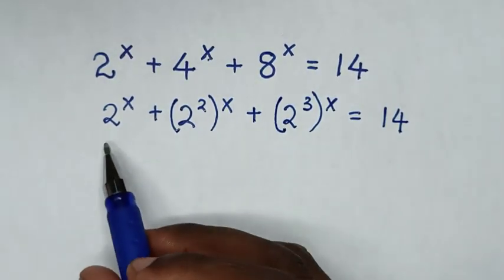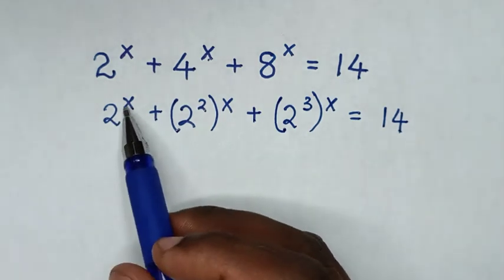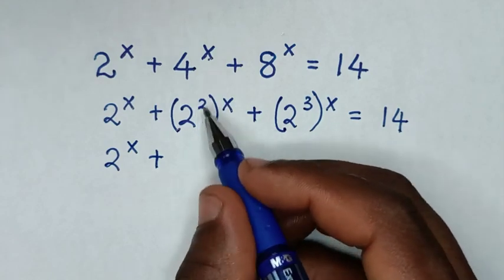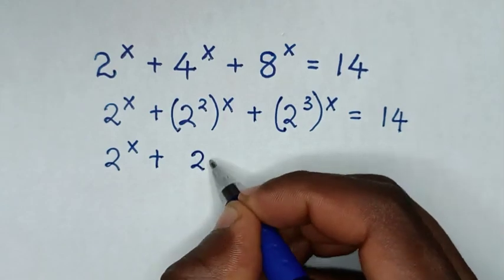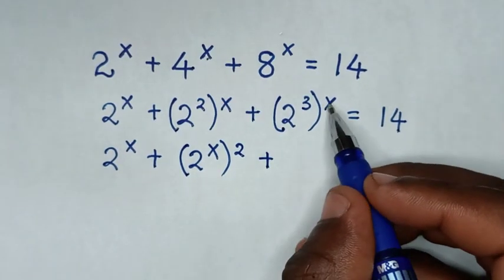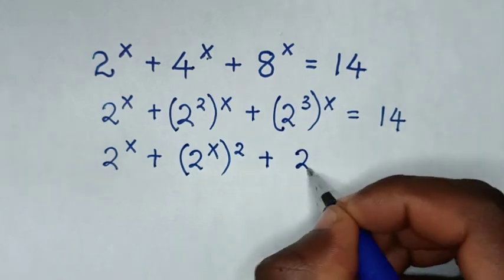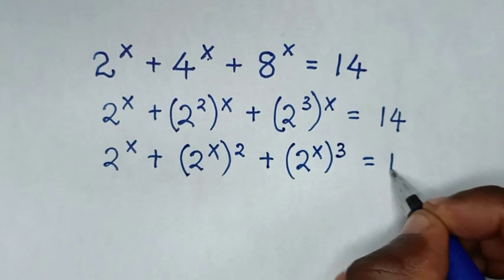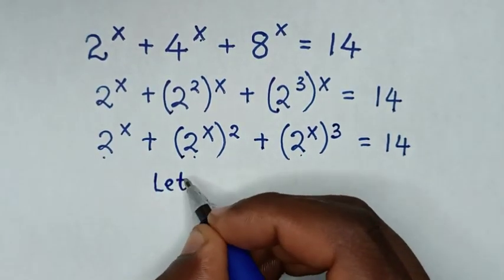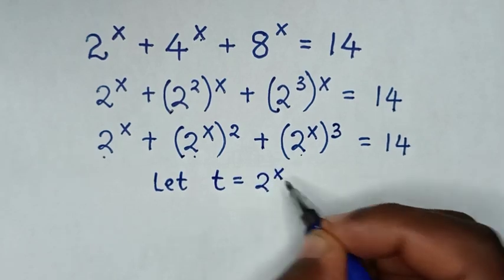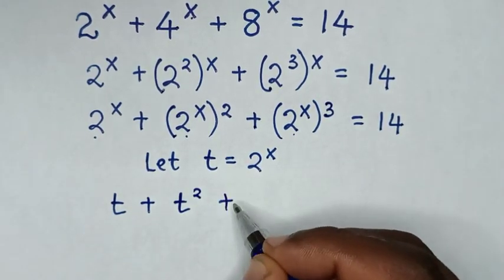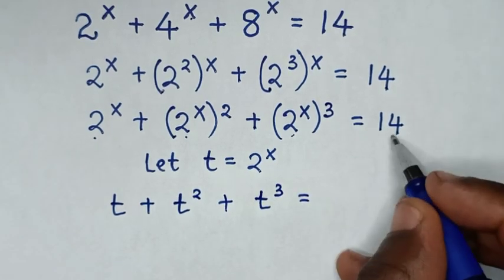Then in the next step we make this side have the same exponent of 2 power of x. So it will be 2 power of x, plus we take the power of x inside and the power of 2 outside the bracket, so it will be 2 power of x bracket power of 2, then plus we take the power of x inside and the power of 3 outside the bracket, so it will be 2 power of x bracket power of 3, is equal to 14. Then from this side 2 power of x is common, so we let t equal to 2 power of x. Then our equation will be t plus t squared plus t cubed is equal to 14.